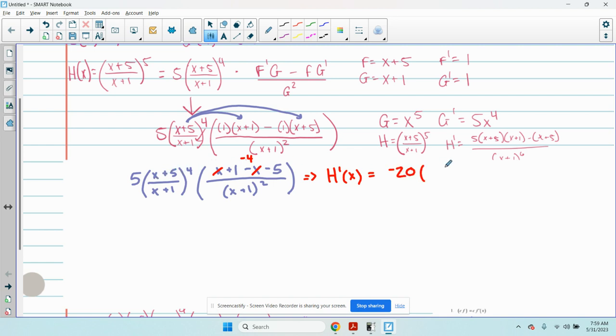x plus 5 to the fourth. This whole thing is negative 4. So when I multiply, I have negative 4 times 5 is negative 20. And then this thing just goes next to it. Over x plus 1 to the sixth. So that's h prime.